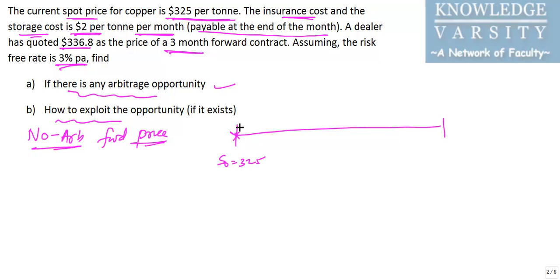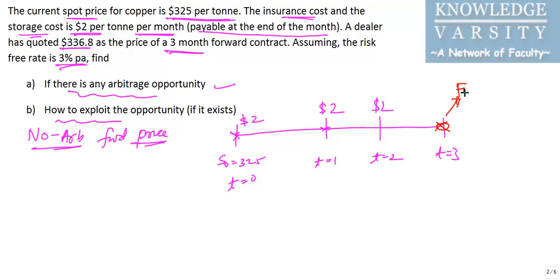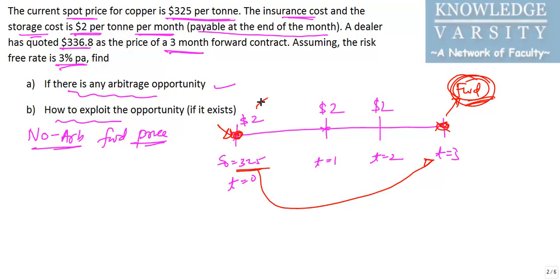I would say you should first draw the timeline to understand the problem. The spot price at t=0 is $325. At the end of month 1 you are paying $2, at the end of month 2 you are paying $2, and at t=3 months you are paying $2. To compute the no-arbitrage forward price, we bring $325 forward to the end, along with each $2 storage cost payment brought to the end.